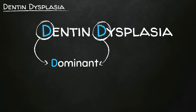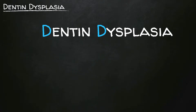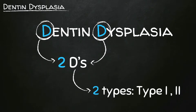Now let's move on to the types of Denton dysplasia. We have two types: type 1 and type 2. Denton dysplasia has not only one but two D's, which means it has two types — type 1 and type 2.